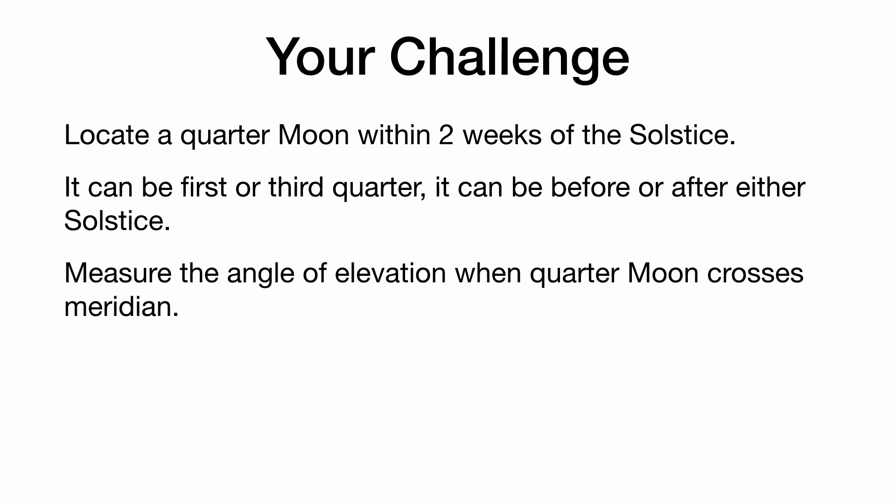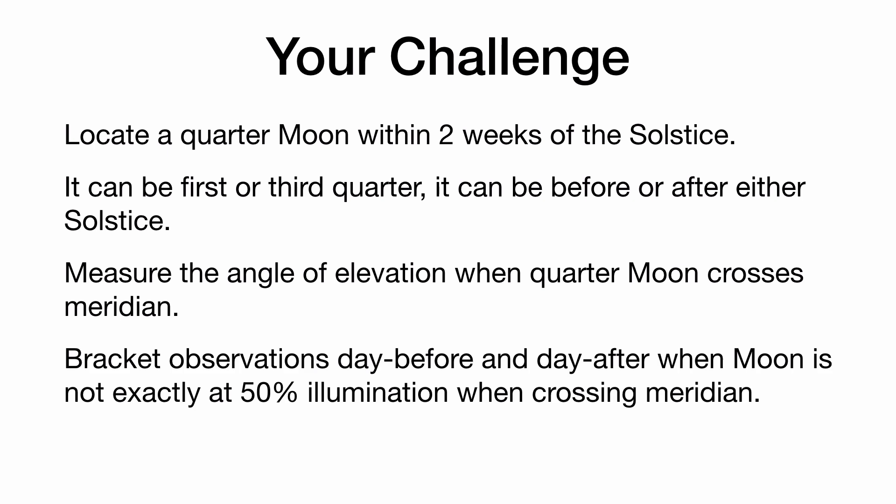You're going to measure the angle of elevation when the quarter moon crosses the meridian — in other words, when the moon is highest in the sky. You could informally call that 'lunar noon,' though that's not technically accurate. You'll bracket your observations the day before and day after, since the moon is rarely at exactly 50% illumination when crossing your meridian. It's best to make two observations over two days.